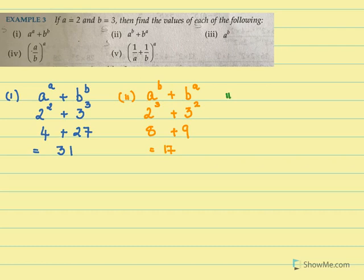For the third one, it is A raised to B. Our A is 2 and our B is 3. So 2 into 2 into 2, and that would be 8.